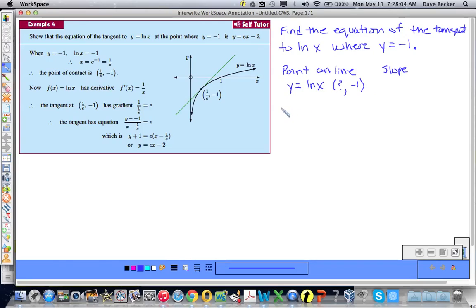So we just do some substitution, negative 1 equals the natural log of x, and we are going to write this in exponential form. Natural log has base e, so that means that, I always think of this as just like a circular thing, e to the negative 1 is equal to x, so I got my x coordinate, boys and girls, and I can write that as 1 over e.